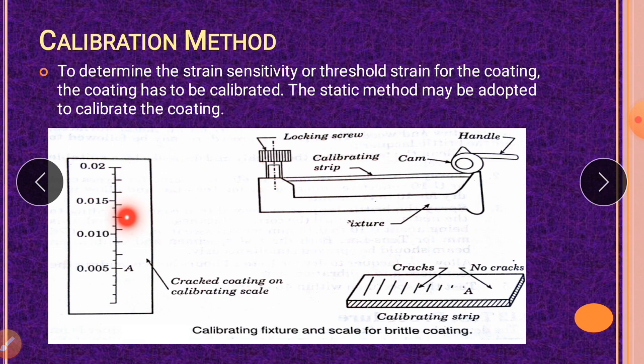So this will be compared with this scale, the calibrating scale. That calibrating scale will show what is the amount of stress. Because this calibrating scale is obtained after this method. So we will compare this with the aluminum strips.